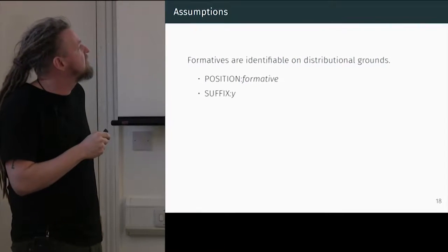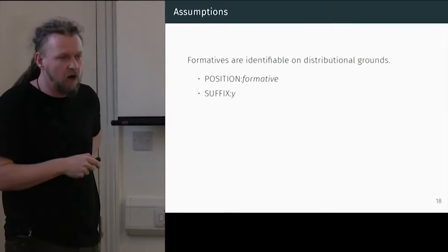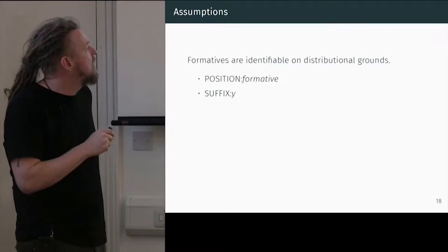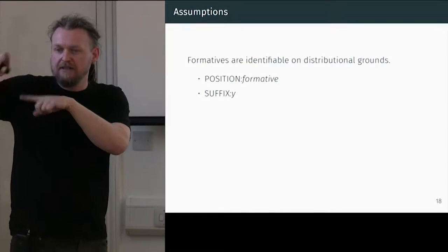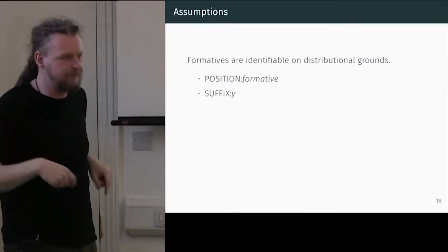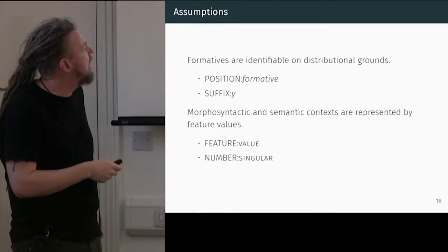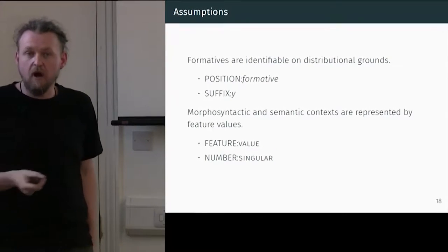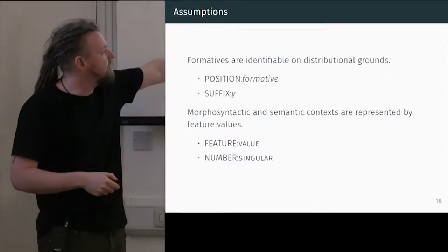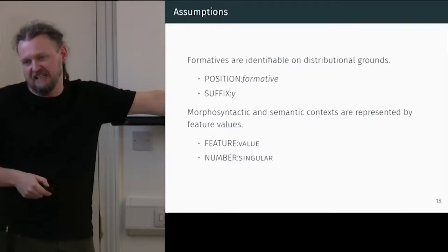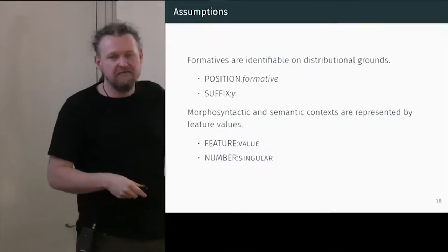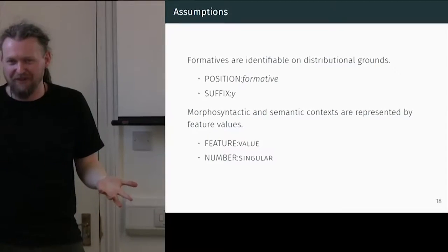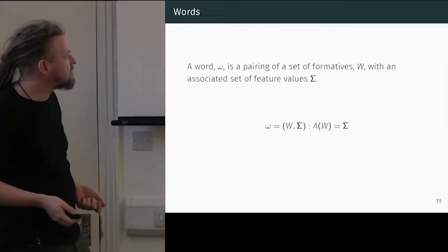We're going to model this in terms of position and formative — for instance, we might say 'it's a suffix, it's Y.' These correspond to morphological loci, and formatives which are mutually exclusive are assumed to be in the same position. Syntactic and semantic contexts which describe the distribution of formatives are represented by feature values of the type feature:value — we might say 'number:singular.' Values of the same feature are assumed to be mutually exclusive: a word is either singular or dual, not both.